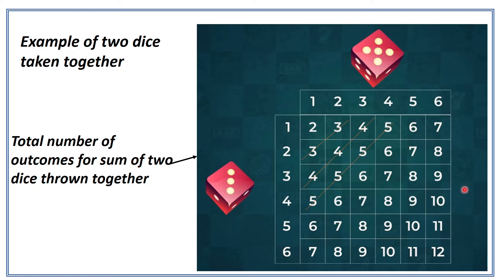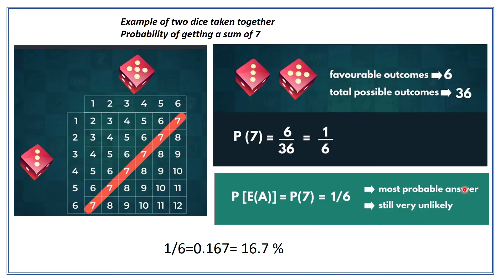This is the total number of outcomes when we sum up the numbers obtained on the two dice, and this total number of outcomes is 36 — that is 6 times 6. Now suppose I am throwing two dice and I want to know the probability of getting a sum of 7. I can get 7 six times — there are 6 such chances where I can get 7.